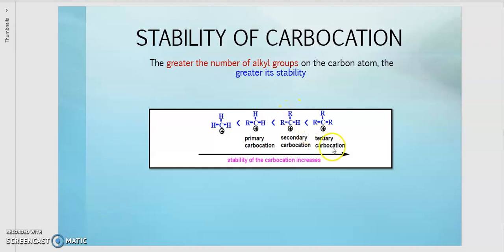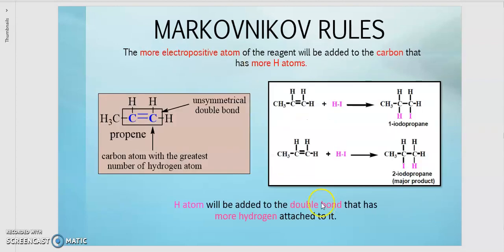And the most stable one is the tertiary carbocation, since all bondings are substituents of R groups — no hydrogens. So the greater number of alkyl groups, the greater its stability. Or in other words, the least number of hydrogens, the greater its stability.